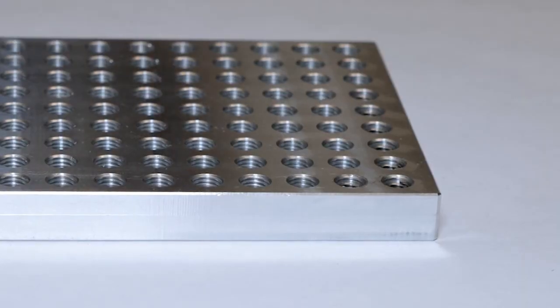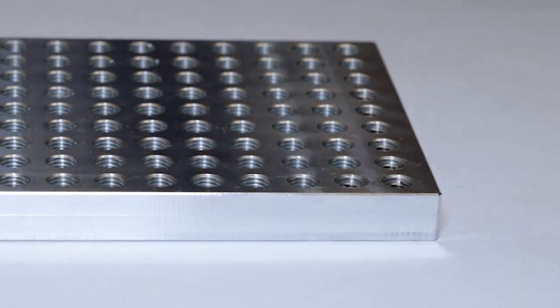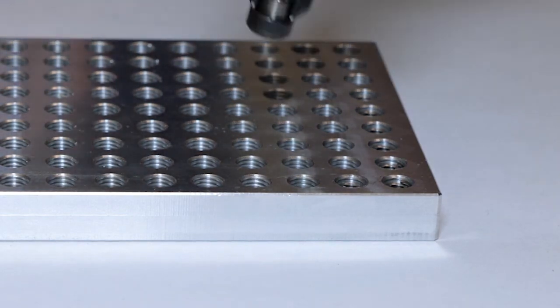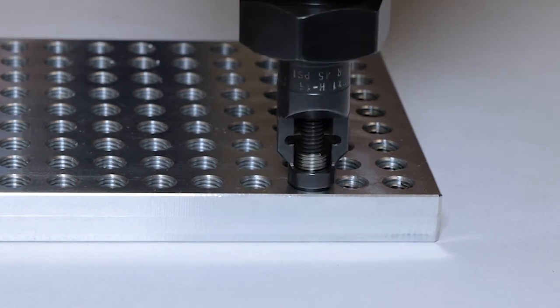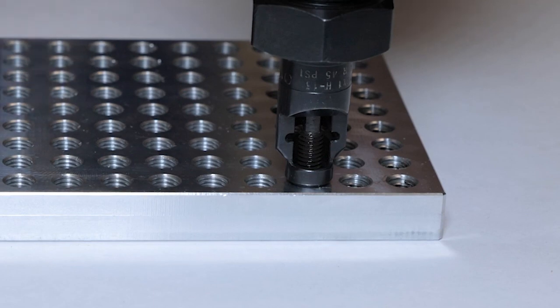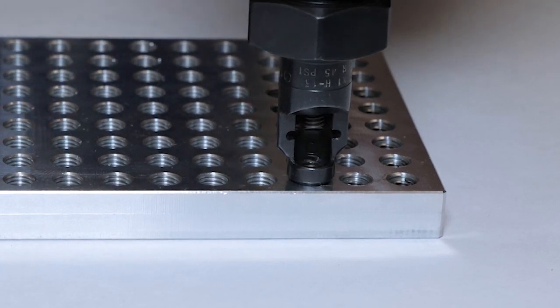Before installing a recoil tanged or tangless insert, be sure the air pressure is set to the minimum setting stamped on the side of the nozzle. The REC 10K will install inserts to their set depth. Inserts should be installed one quarter to one half turn below the surface. And then a press of the button reverses the tool out.